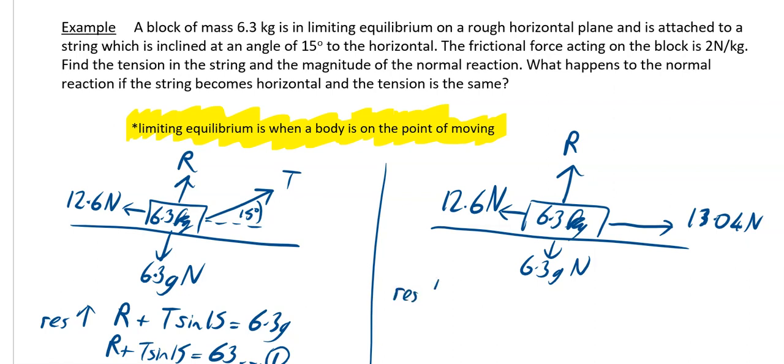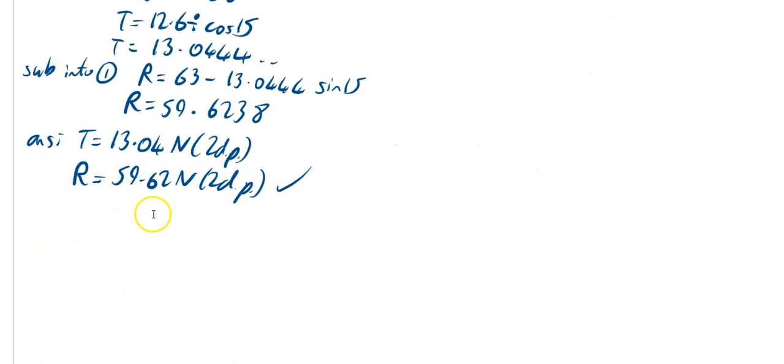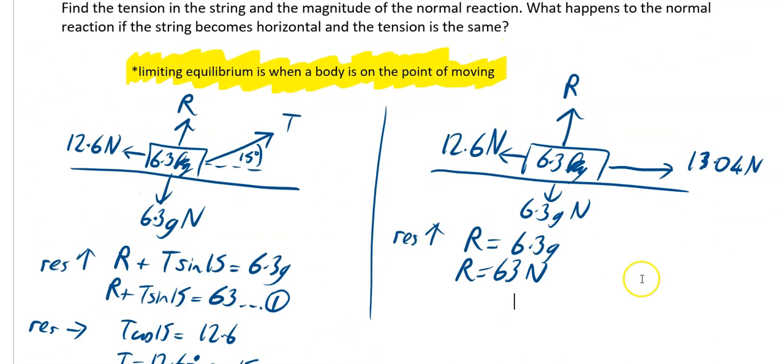So if you resolve vertically, your R is equal to just 6.3g, so R is equal to 63 newtons. I think my last R was 59.62, so my normal reaction has increased, so we will just say that normal reaction increases to 63 newtons.